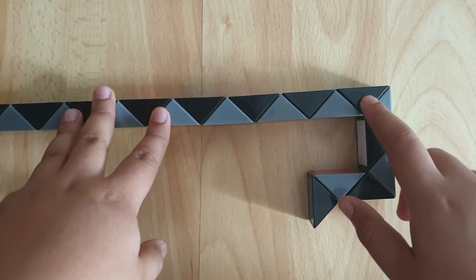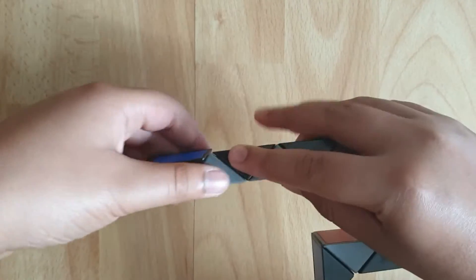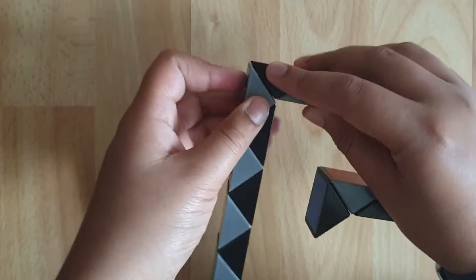And then from there you can count five, so one, two, three, four, five, and then turn everything else two times.